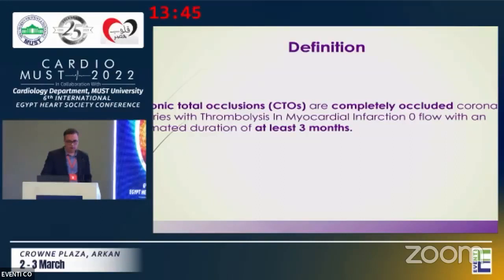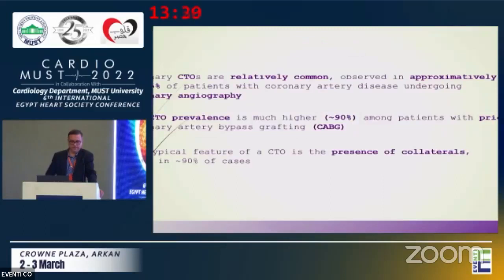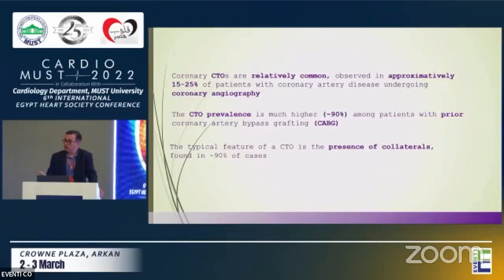The definition of CTO — chronic total occlusion — is a completely occluded artery with TIMI flow zero, with an estimated duration of at least three months. Coronary CTOs are relatively common, observed in approximately 15 to 25 percent of patients with coronary artery disease undergoing coronary angiography. The CTO prevalence is much higher — over 90 percent — among patients with prior coronary artery bypass grafting.